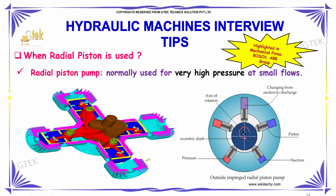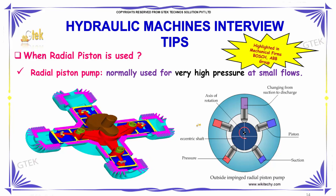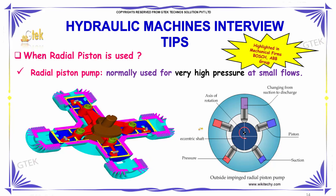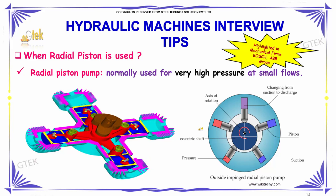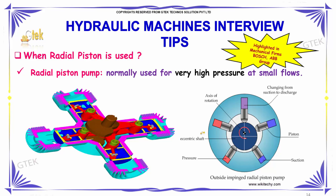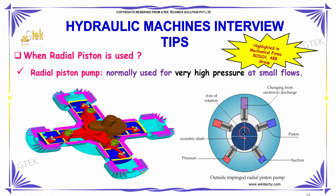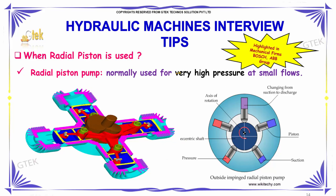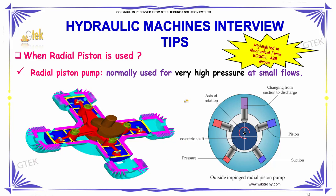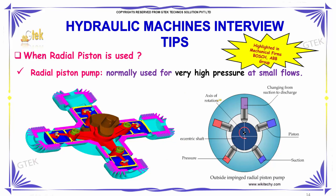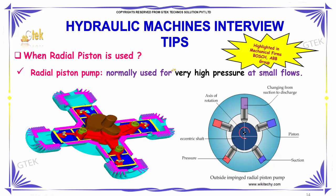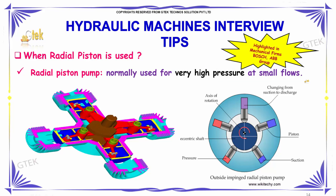When is the radial piston going to be used? The radial piston pump is normally used for very high pressure at small flows. This is the usage and deployment of the radial piston.